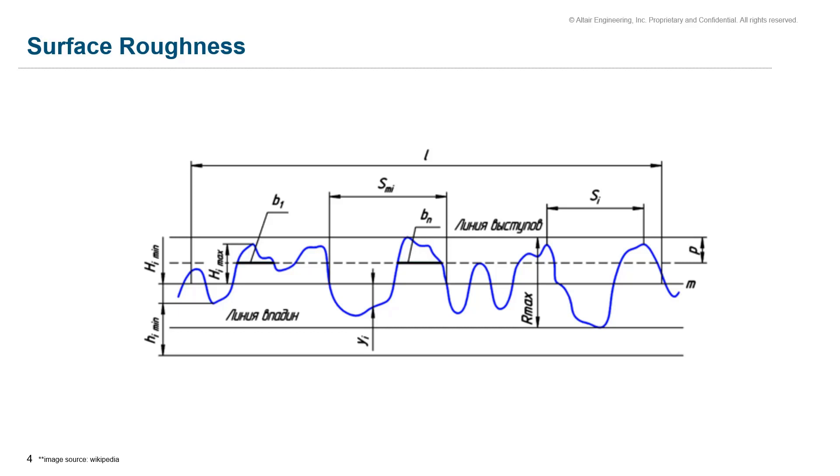In general, a high roughness value is undesirable, but it can be difficult and expensive to control in manufacturing processes. Decreasing the roughness of a surface usually increases its manufacturing cost and this often results in a trade-off study between the manufacturing cost of a component and its performance in an application.